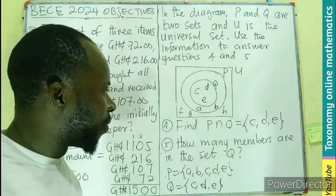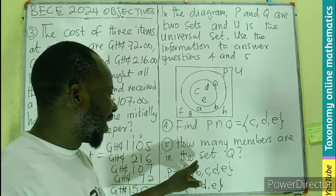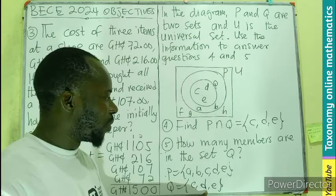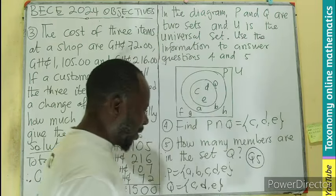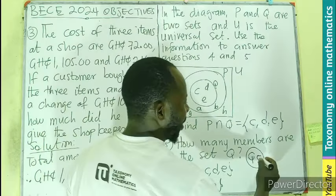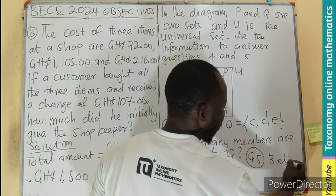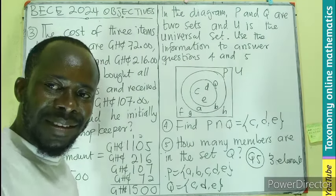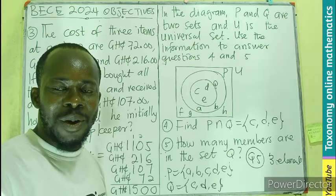That is all we are looking for in that set. Then, how many members are in the set Q? Question 5: how many members are in the set Q? There are three members or three elements. So I guess you understood. Good, like, share, and comment. Bye.